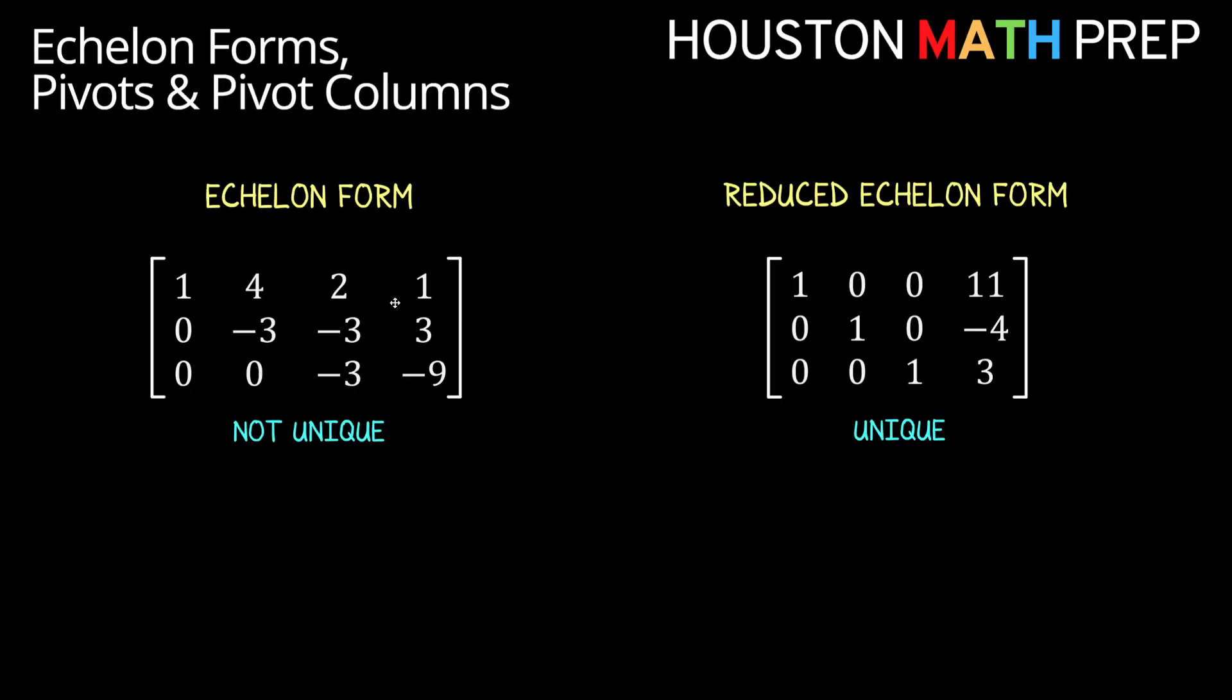On the left, I might have my system in this matrix form, and it's in echelon form. But maybe you prefer to reduce the second and third rows by a factor of negative three, since you see a common multiple there. We both have an equivalent system in echelon form, but it's not the same matrix.